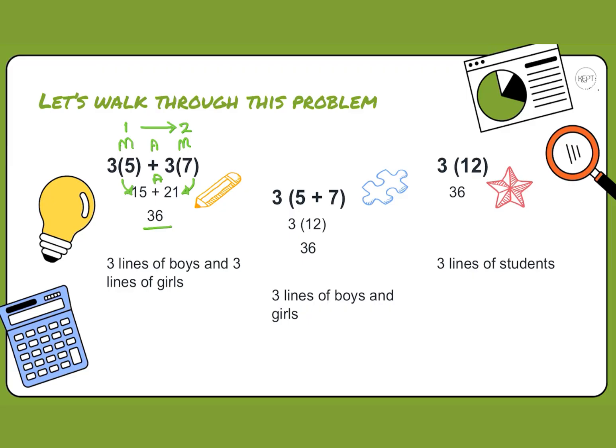We have the boys, which represent the 5 here, and the 7, which is the girls, and we can combine those two together to give us 12 students. With PEMDAS, we always start with what's in parentheses, so we do that before multiplication. 5 plus 7 is 12. 12 times 3 is 36 as well.